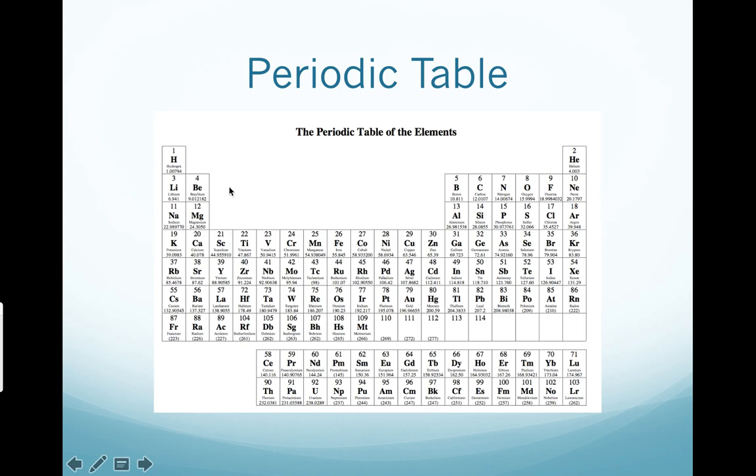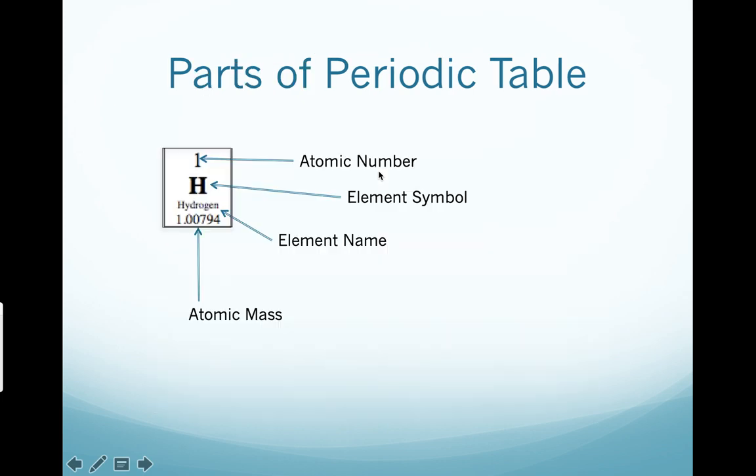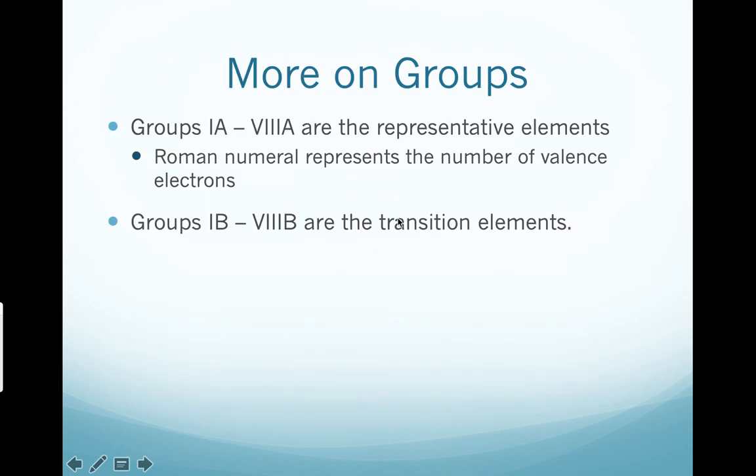Now the B, when we talk about B, we're talking about the transition metals. There's 10 of these, and these are the inner transition metals. The B are the transition elements, group 1B to 8B. These are all the transition elements.